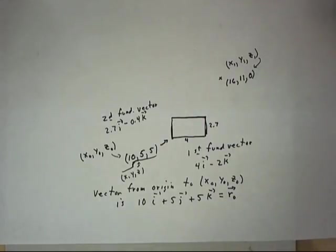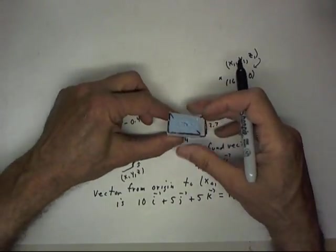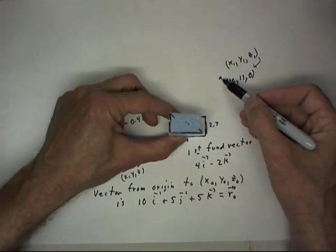So there's a vector we're going to call r sub zero. And I want to ask now, what are the components of the vector that runs from here down to this point?